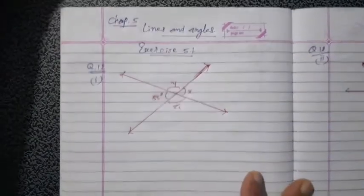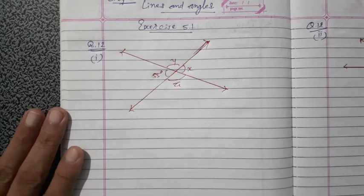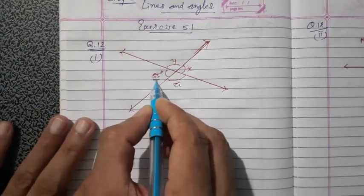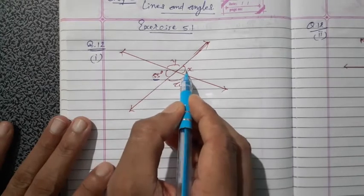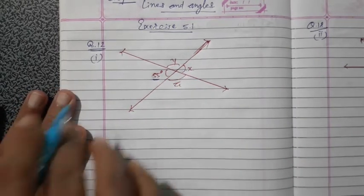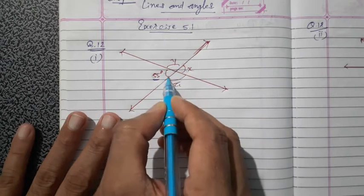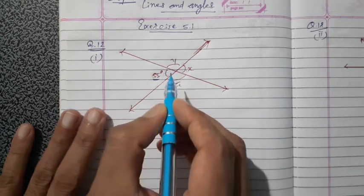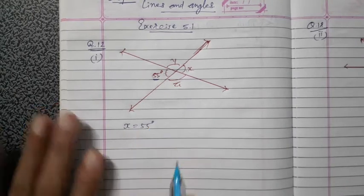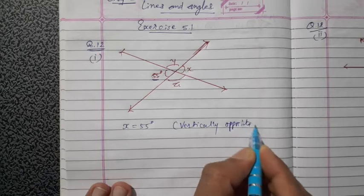Now in the first figure, there are two cross lines, which means there are vertically opposite angles. The measurement of one angle is given, which is 55 degrees, and here x, y and z are to be found. Now x and 55 degrees are on opposite sides of the intersecting lines, means they are vertically opposite angles, so they are equal in measurement. So x equals 55 degrees.